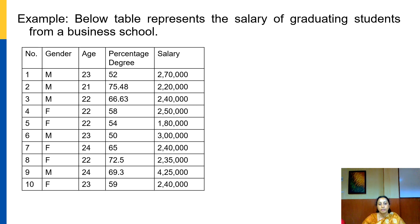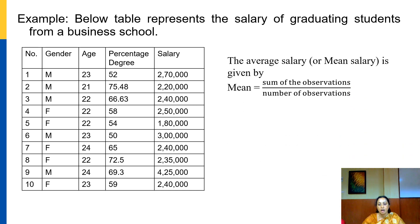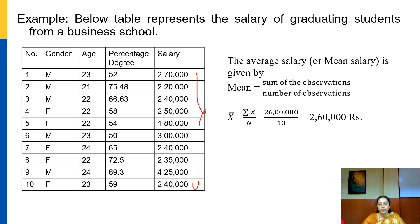Let us take an example. In this table we have the salary of graduating students from a business school, and we want to find the arithmetic mean — the average salary. Using the formula x̄ = Σx / n, if we add all the salaries the total is 26 lakhs, and we have 10 observations. So 26 lakhs divided by 10 gives us an average salary of 2 lakhs 60,000. This is how we find the average for individual observations.